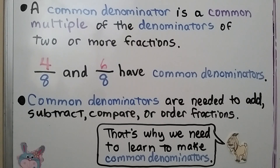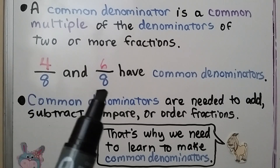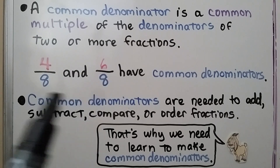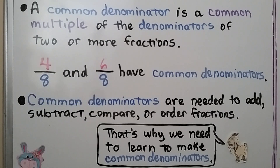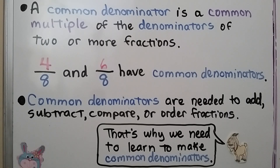A common denominator is a common multiple of the denominators of two or more fractions. Here we have four-eighths and six-eighths — they have the same denominator, so they have a common denominator. Common denominators are needed to add, subtract, compare, or order fractions. That's why we need to learn to make common denominators.